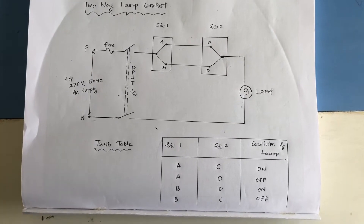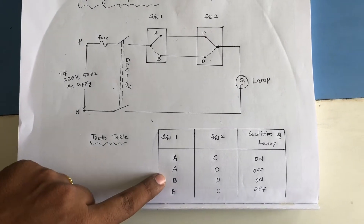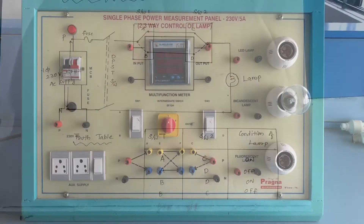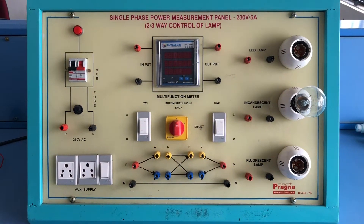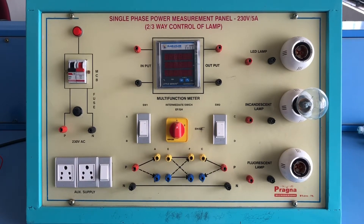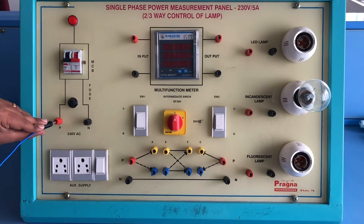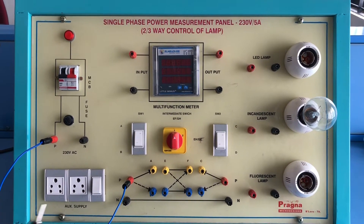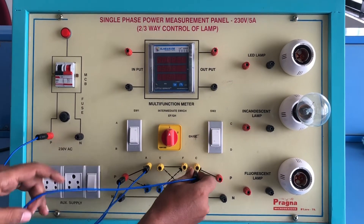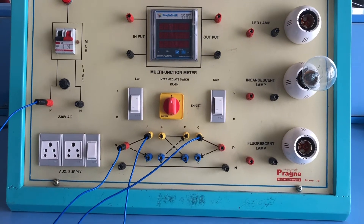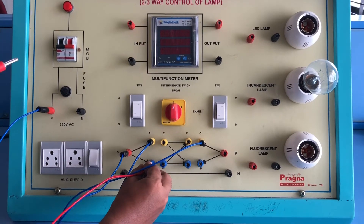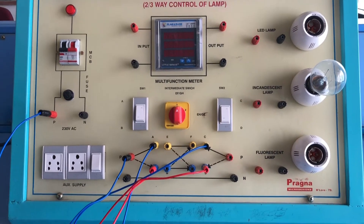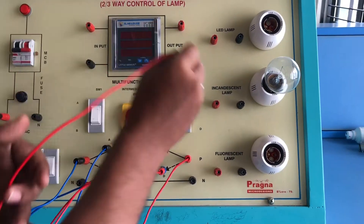We have to verify this truth table for different switch positions. The connections are: phase to switch 1 common, A to C, B to D, and switch 2 common to lamp.